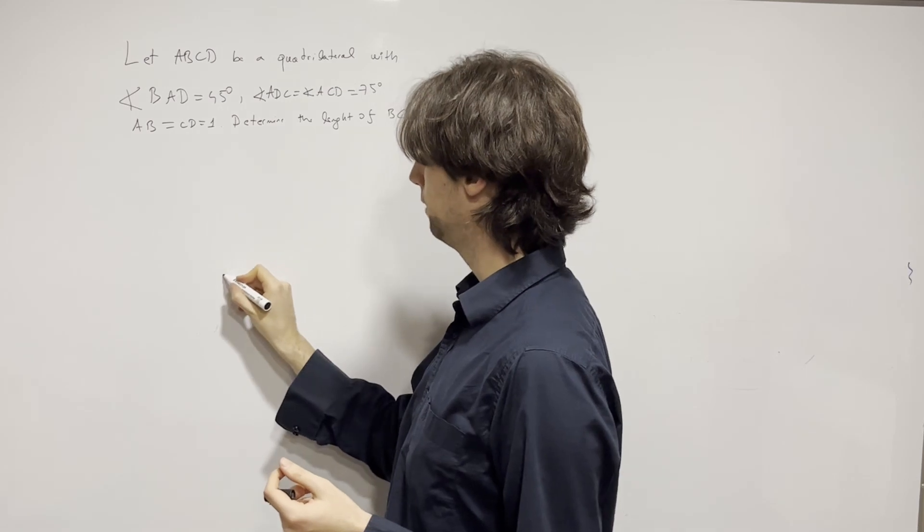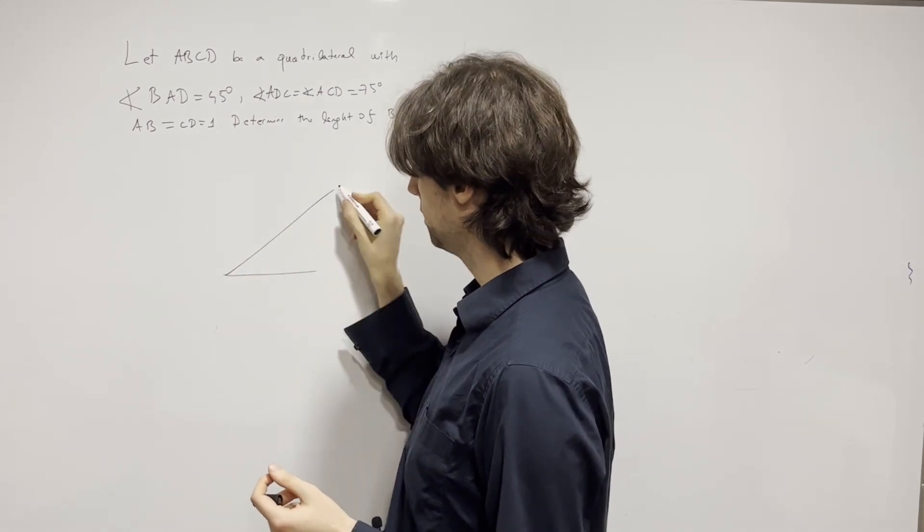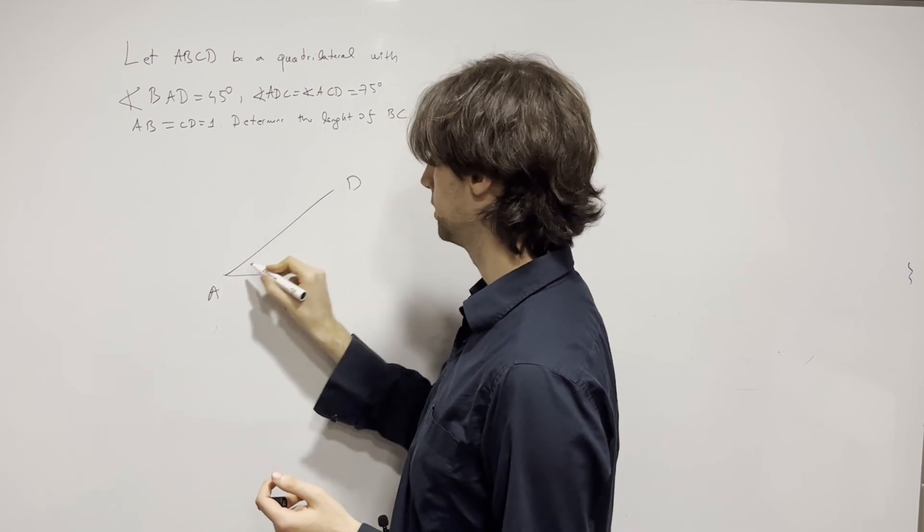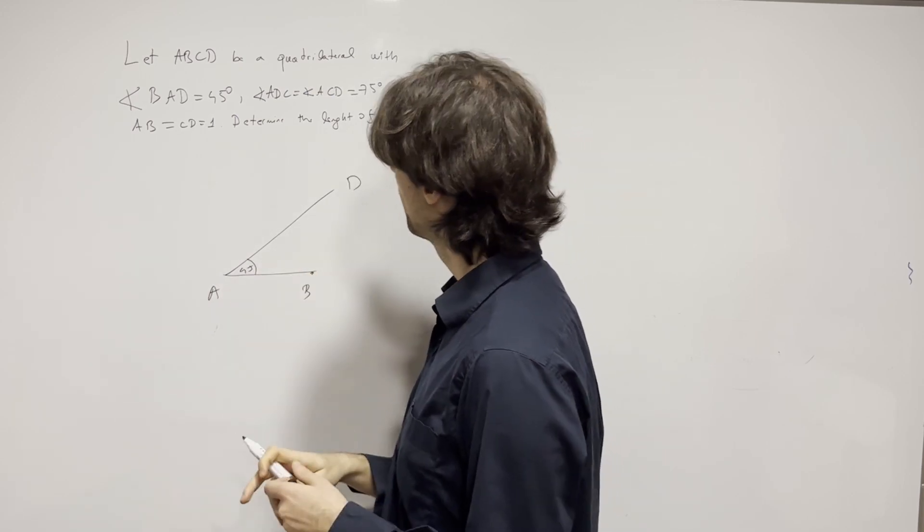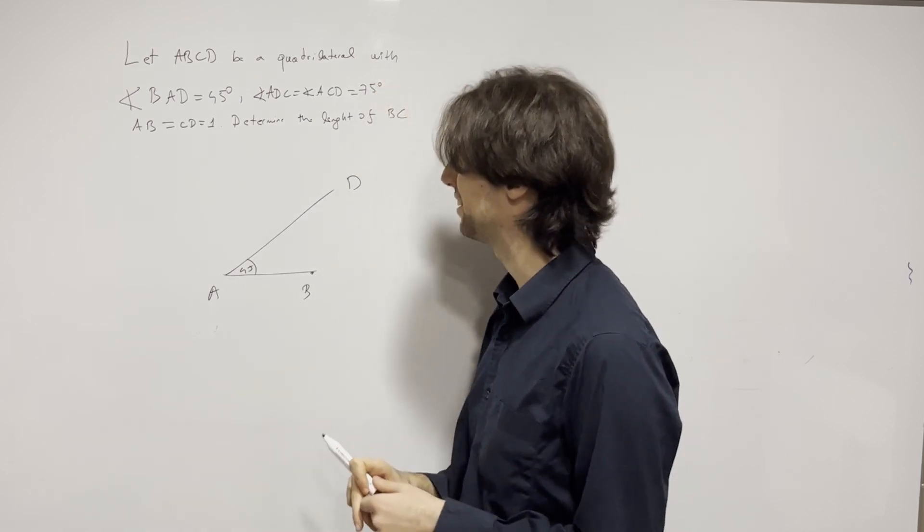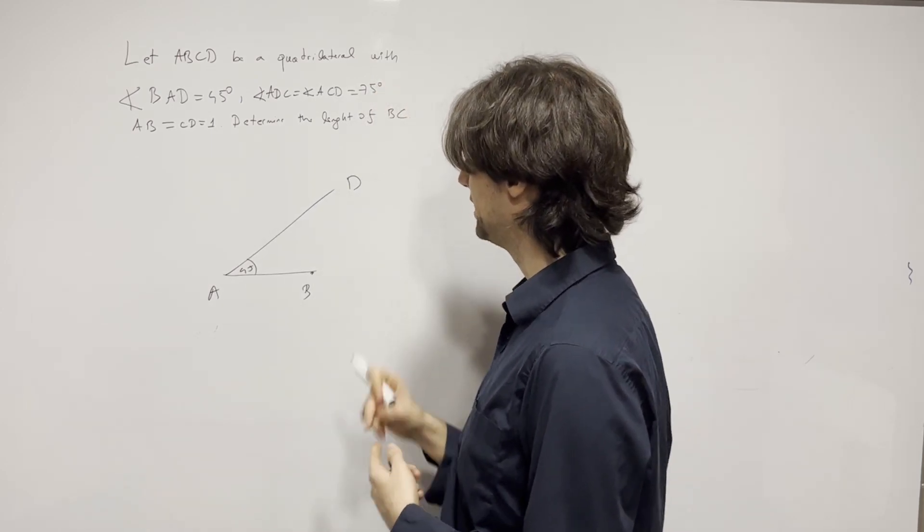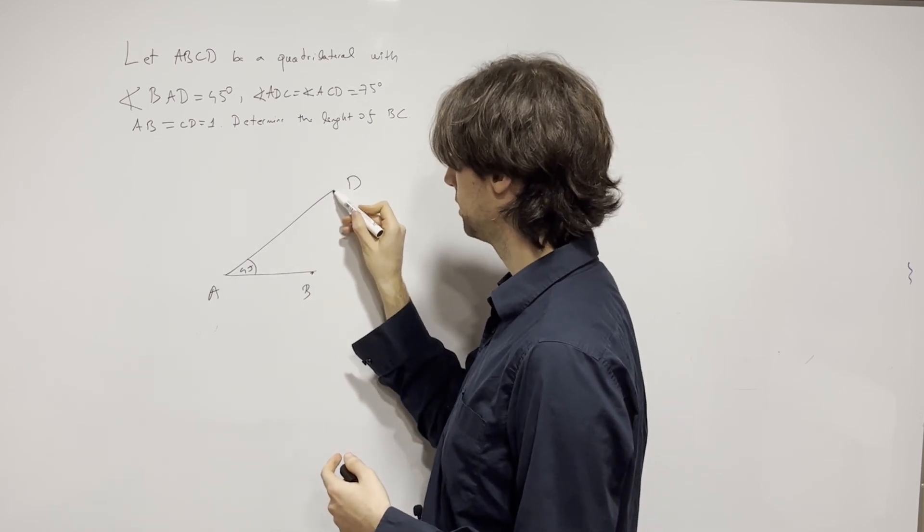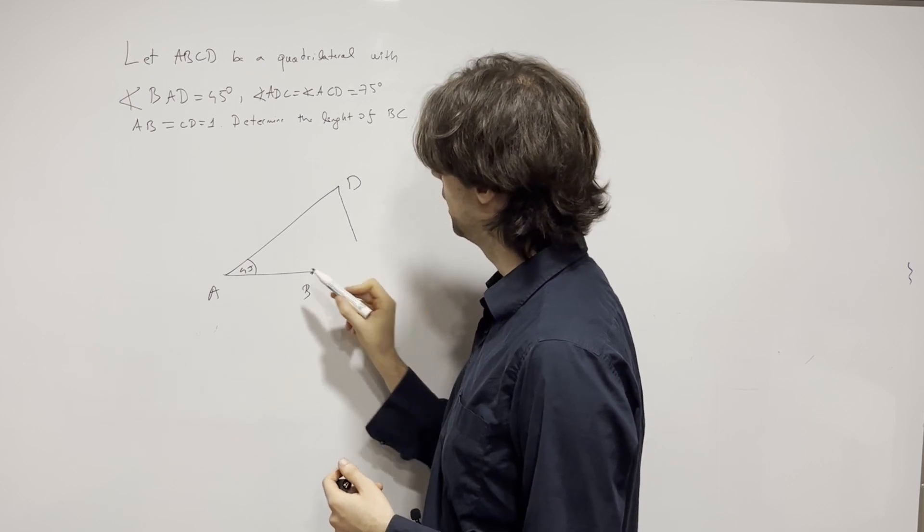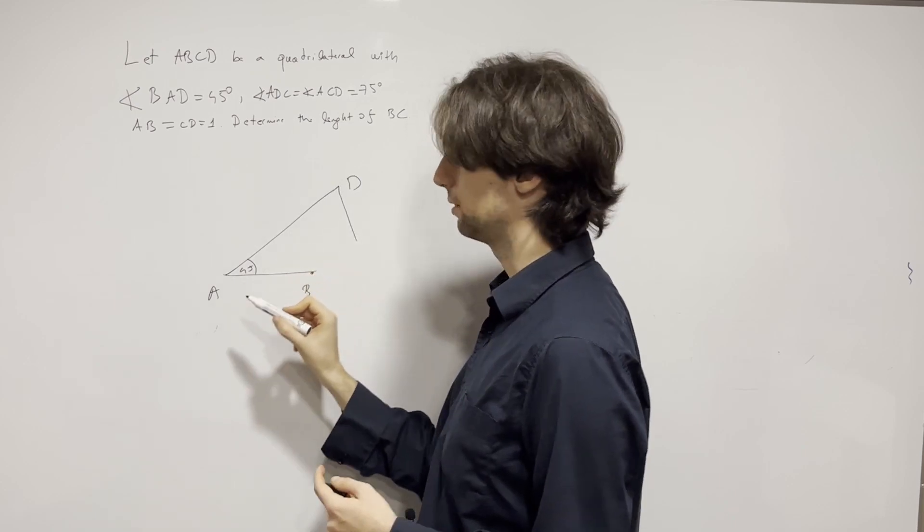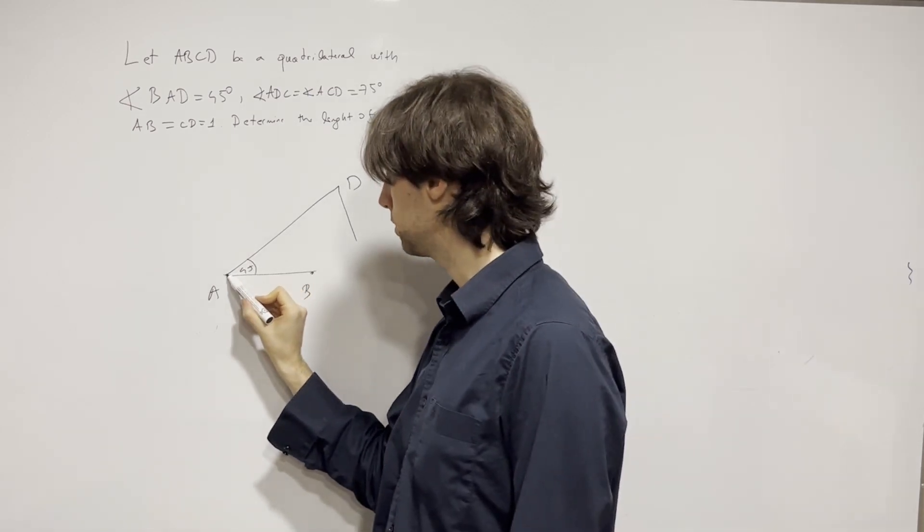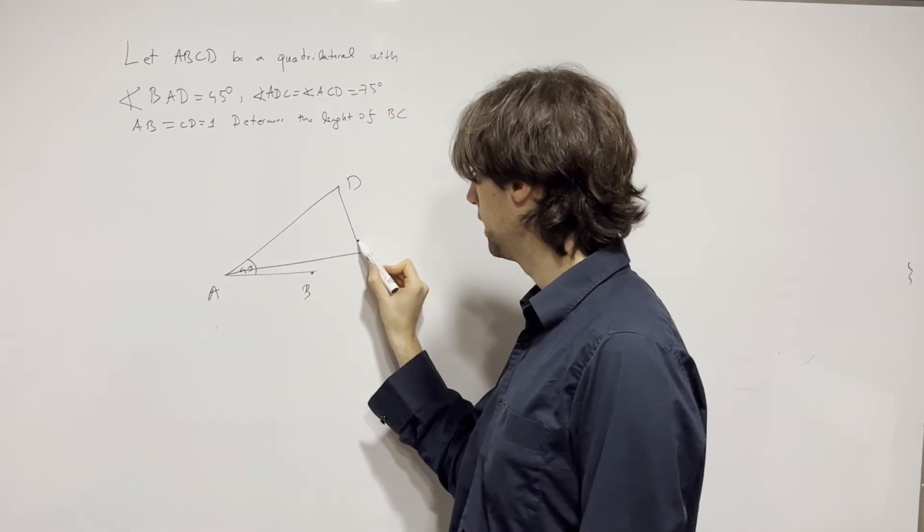Let's see, first how can we draw the picture? I want to draw angle BAD first. We're going to have BAD, there's AD, this is 45. Now what do I need? I need ADC and ACD at 75. So ADC is going to be 90, let's make this like 75-ish, and ACD is also 75.